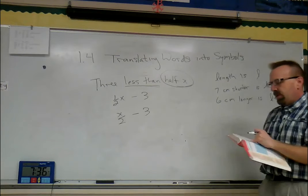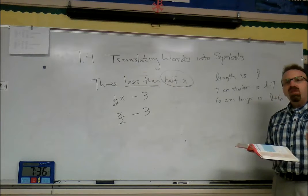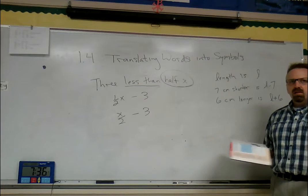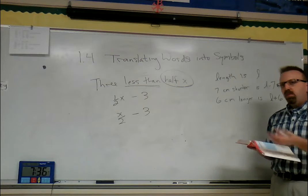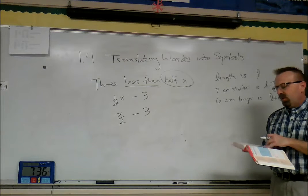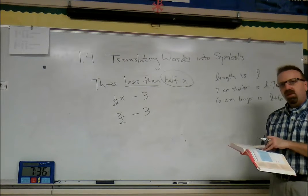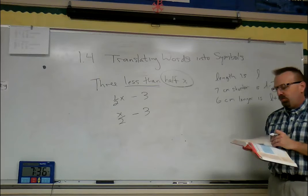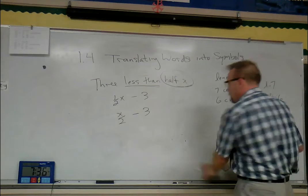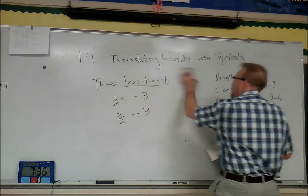I'm not going to write all the formulas down. Some of them you already know - how do we find area? Length times width. Perimeter? You add up all the sides. They have these formulas right there on page 15 if you need them. Distance is rate times time, and so on.